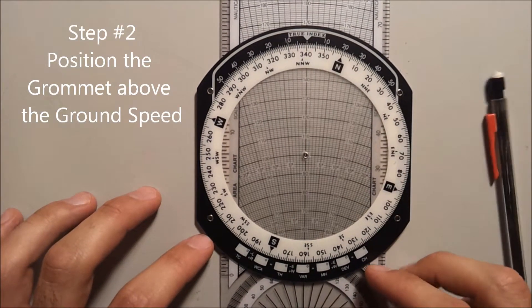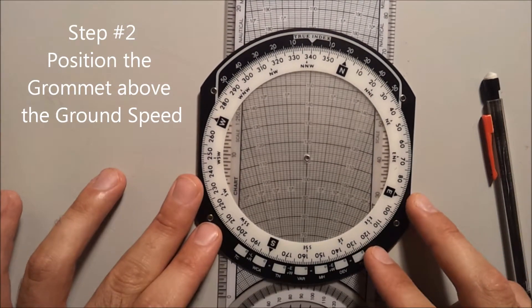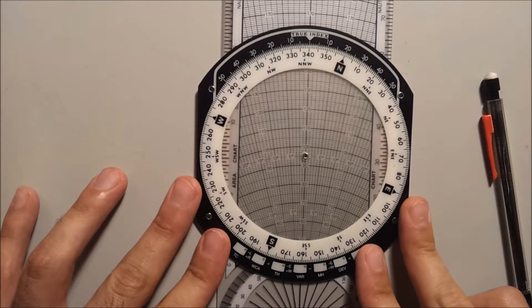Step 2. Align the grommet to your ground speed. In this case we will use 95 knots.